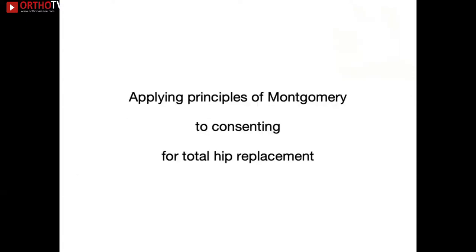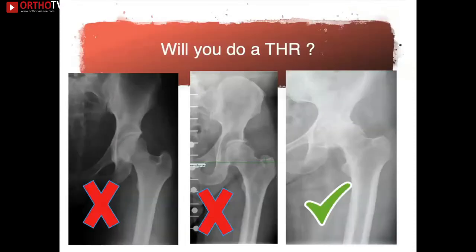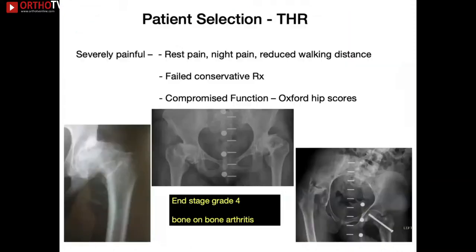Applying these principles to hip replacement consent, patient selection is critical. Evidence shows that hip replacements for premature arthritis — not bone on bone — produce very poor subjective outcomes. Make sure you select patients properly in terms of pain, end-stage grade 4 arthritis, and compromised function. Once done, the conversation must begin by managing expectations — 7% to 15% of patients may be quite dissatisfied due to pain, leg length inequality, persistent limp, or a major complication.